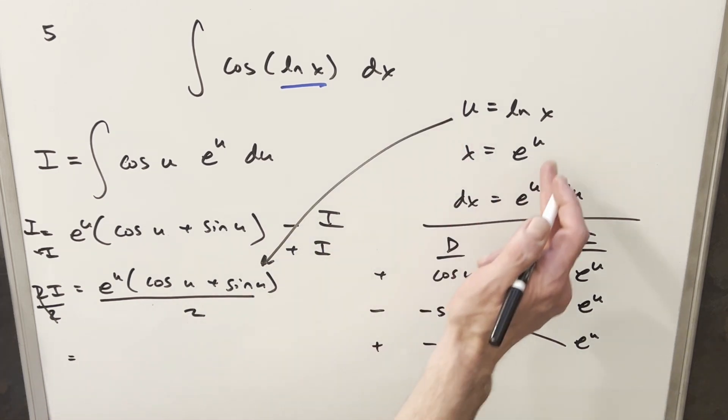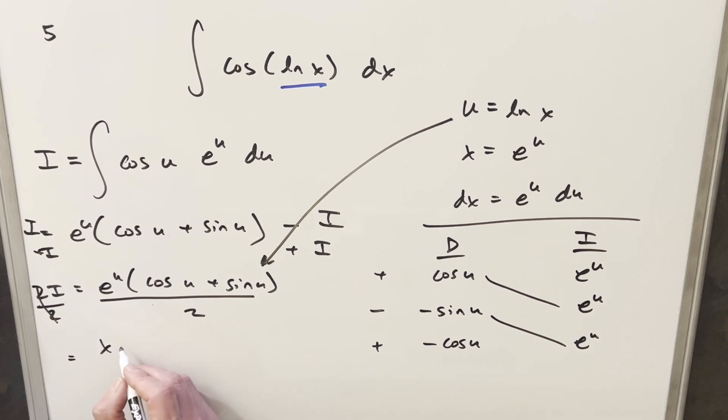So now for e to the u, we already have that. That's x. So this is going to be x cosine, our u value against natural log x. So this is going to become cosine ln x plus sine ln x all over 2 plus c.